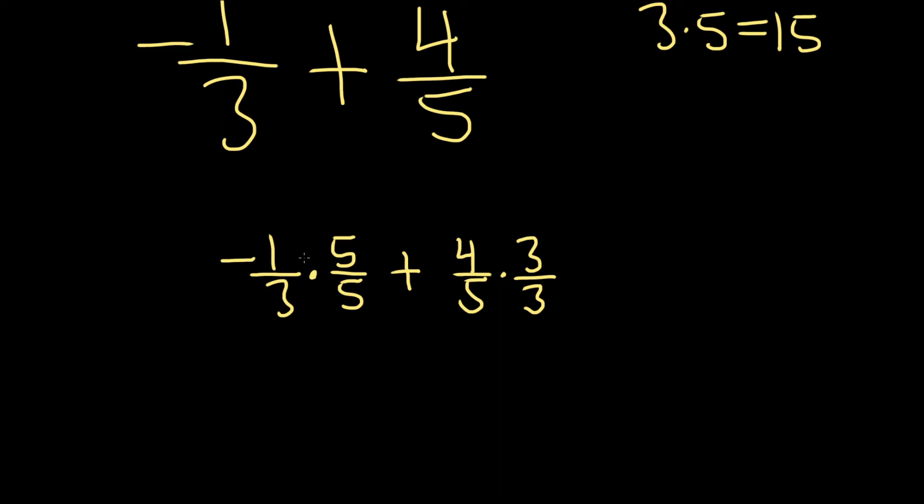Okay, so now we can multiply straight across here. Negative 1 times 5 is negative 5. 3 times 5 is 15. And then plus 4 times 3 is 12. 5 times 3 is 15.